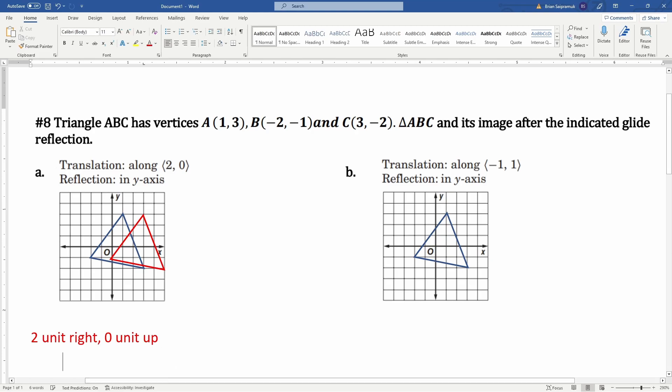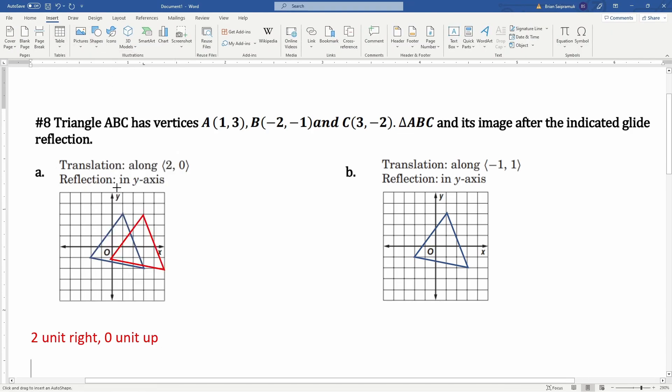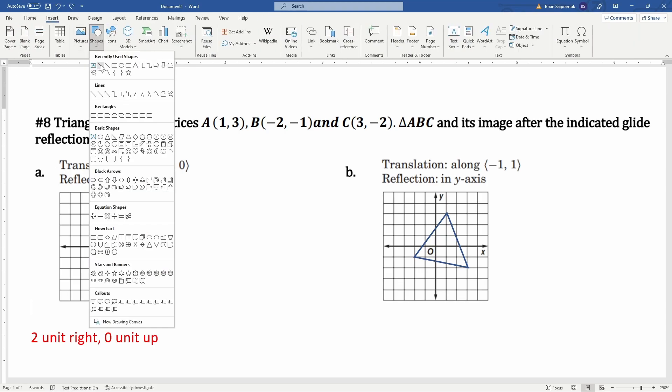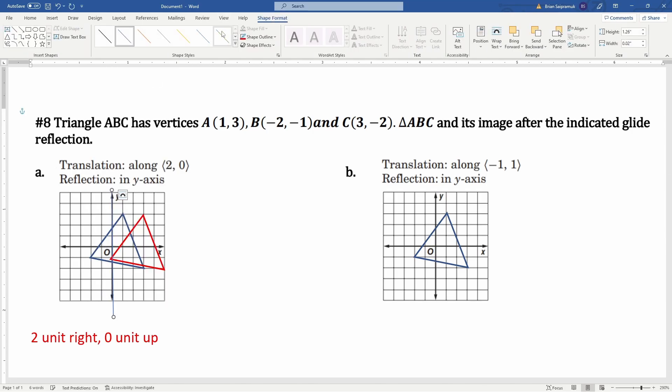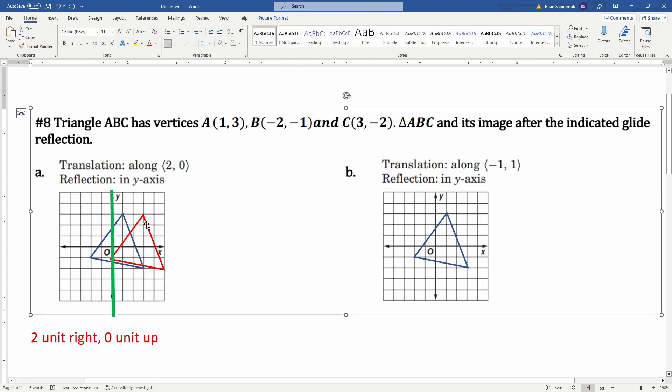Now it says to reflect it. I just have to draw a line of reflection. Here is my line of reflection on the y-axis. I'm going to make that a line and make this line green so we can see it.